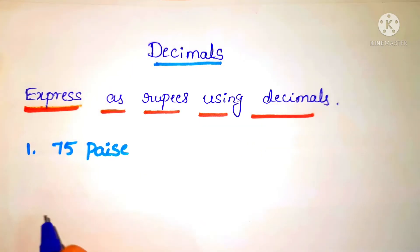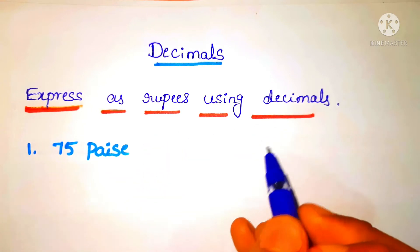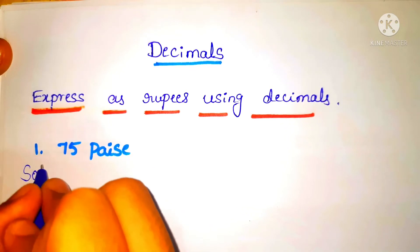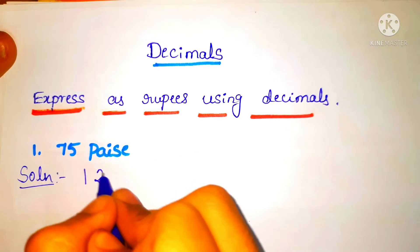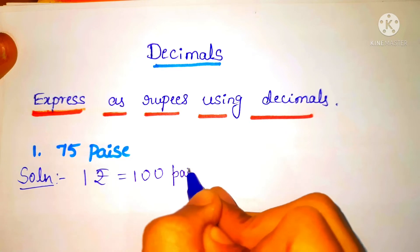Here they have given 75 paise. We have to convert it into rupees using decimals. So 1 rupee is equal to 100 paise.